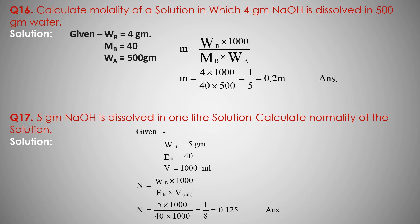Normality N equals Wb upon Eb into V (in milliliter). Wb is 5, Eb equivalent mass is 40, V is 1000 milliliter. Multiply by 1000. Answer is 1 by 8, which equals 0.125. Normality of solution is 0.125. Question number 17 is complete.